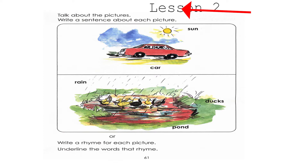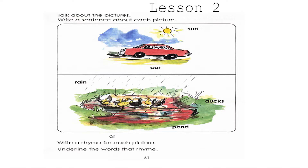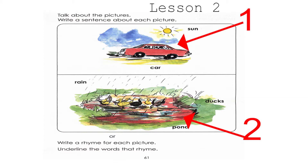Under that, it says, please talk about the pictures and write a sentence about each picture. How many pictures can you see on this page? We can see two pictures. Can you see two pictures, boys and girls? Oh yes, very good.